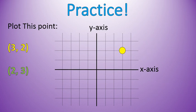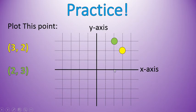Our next one is the point 2, 3. This is a common mistake that people make when they're first starting — mixing up the numbers. Go ahead and plot the point 2, 3. Did you plot it right here? Starting at our origin, did we go 1, 2? Our first number is how far we move right to left, and our second number moves us up and down. So we went 1, 2, and then 1, 2, 3. That's the point 2, 3 in green.